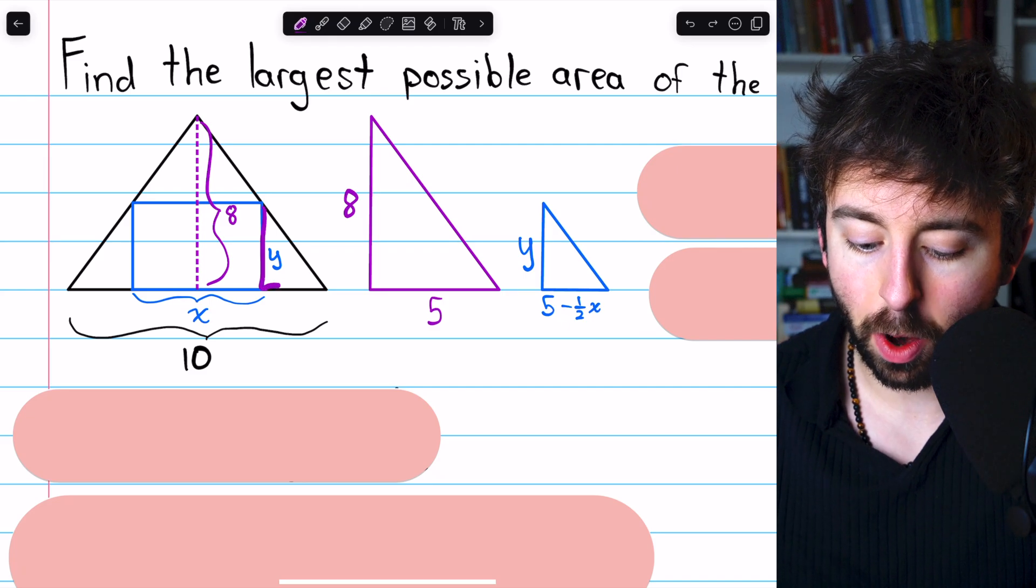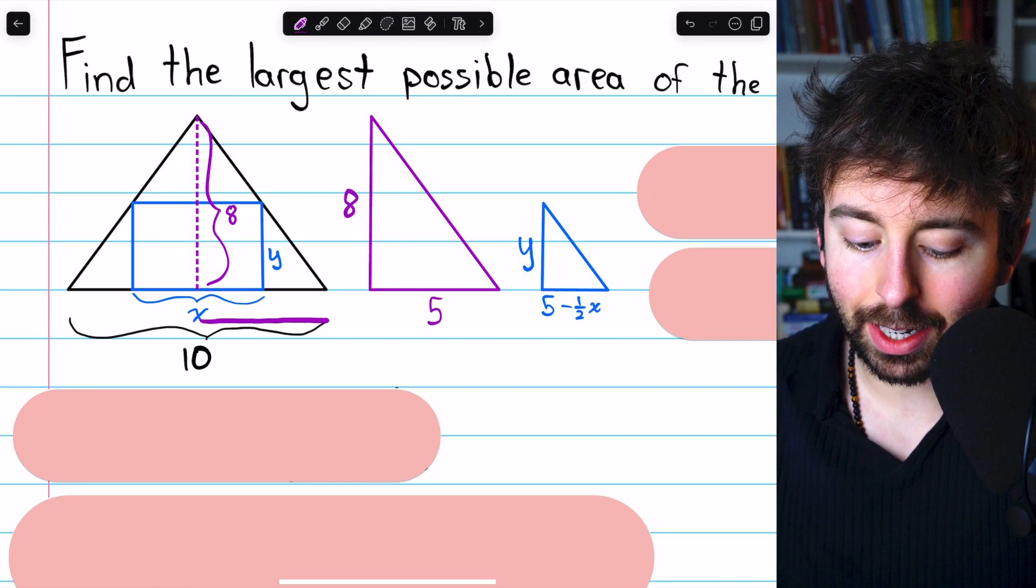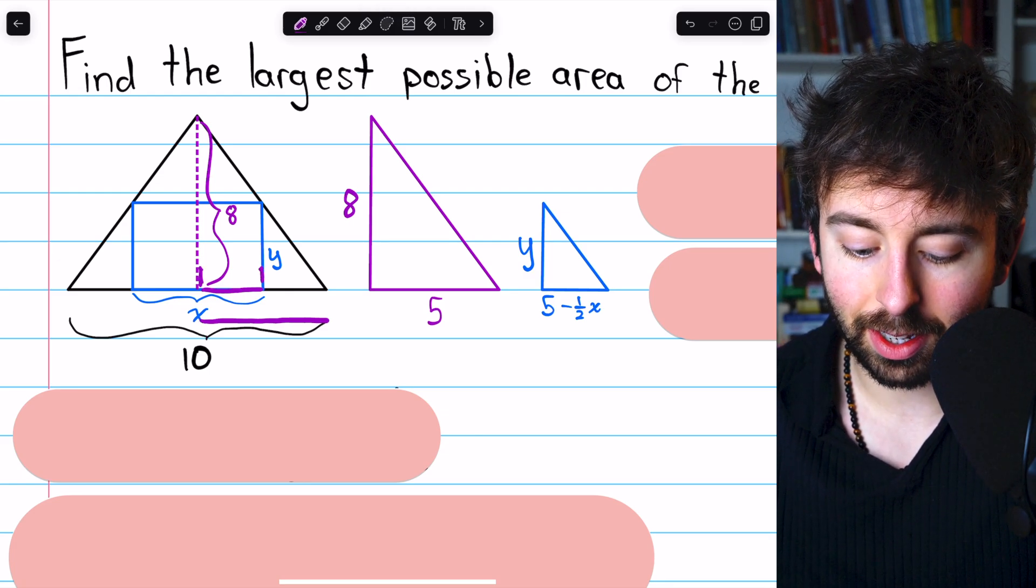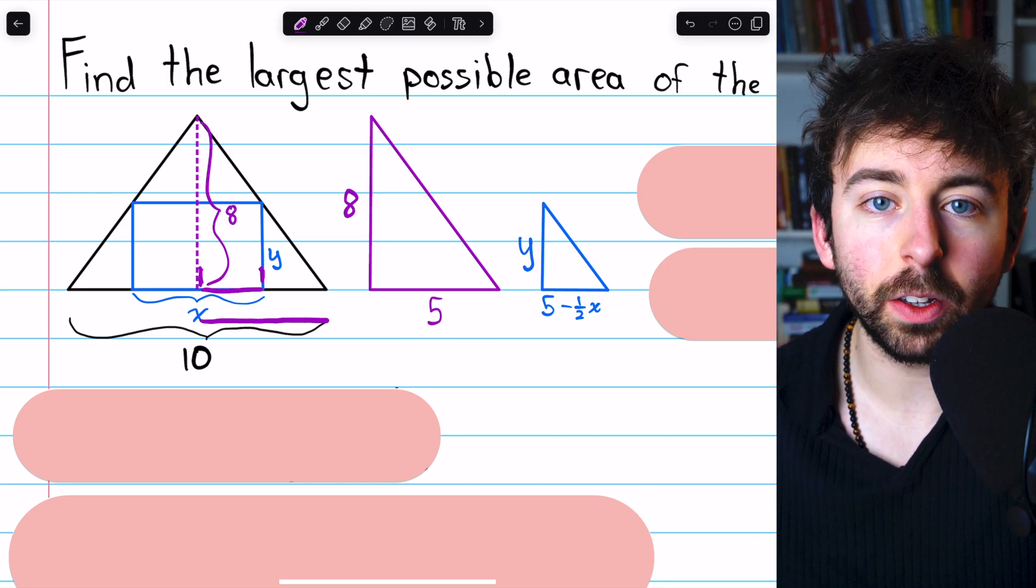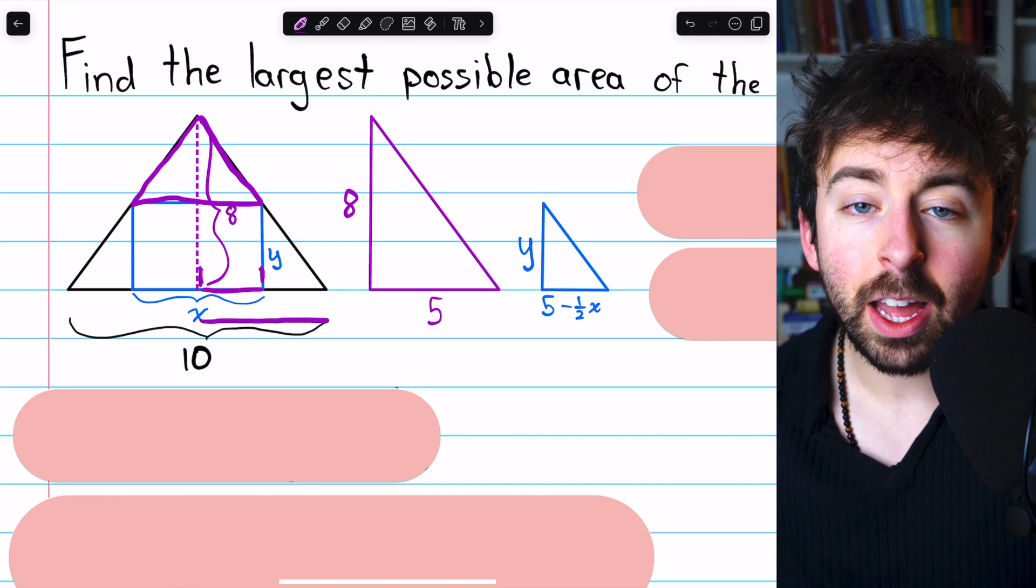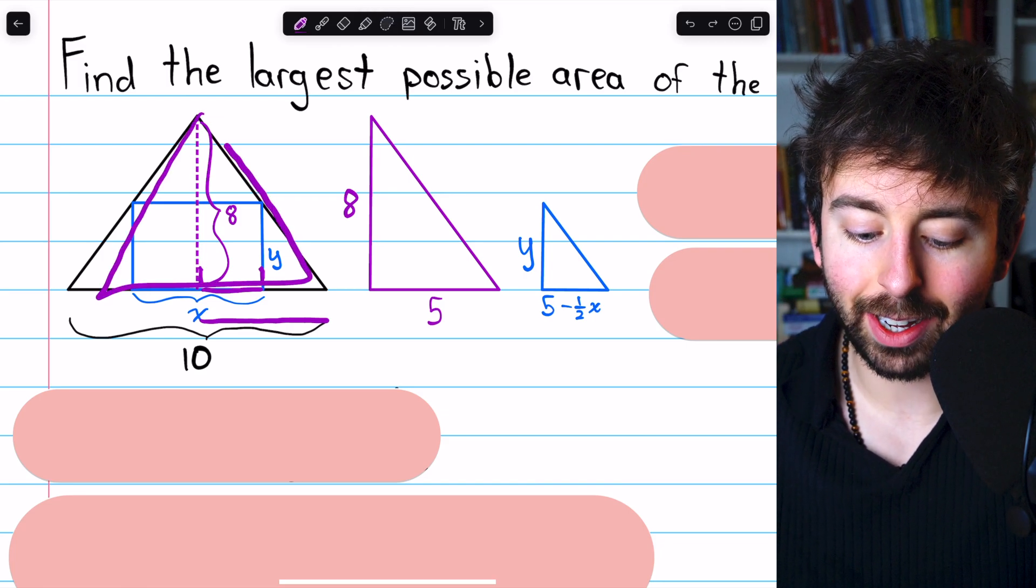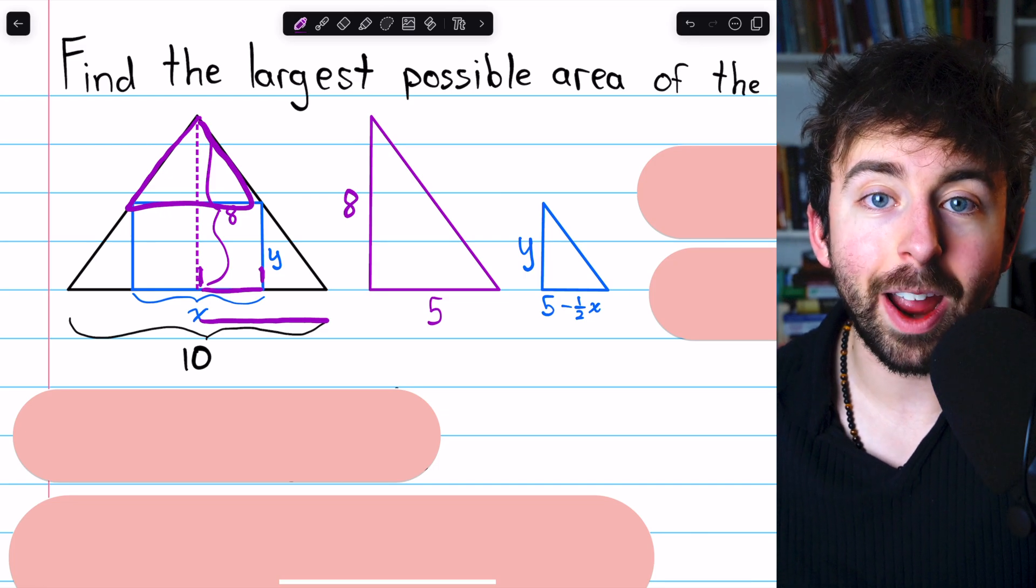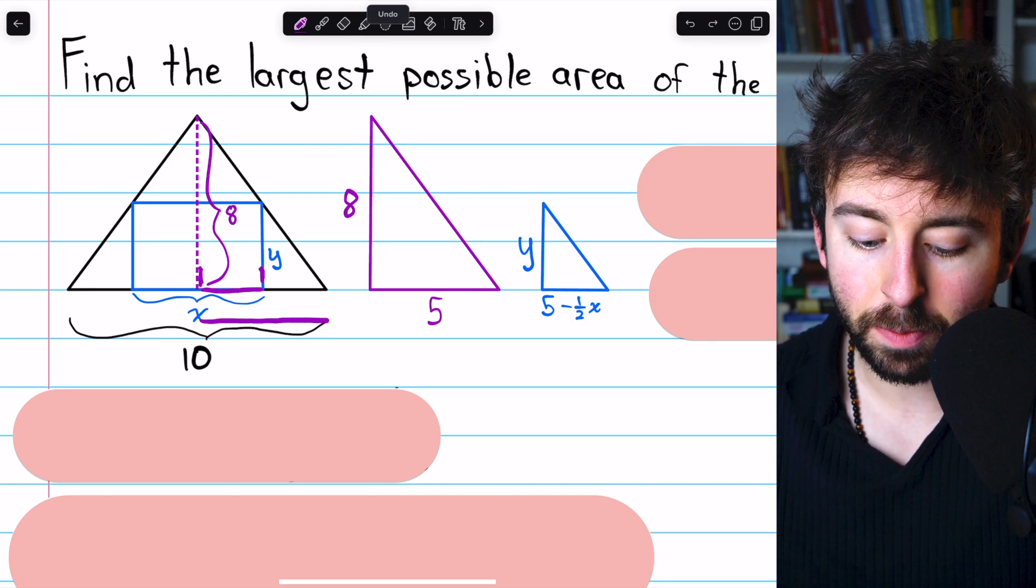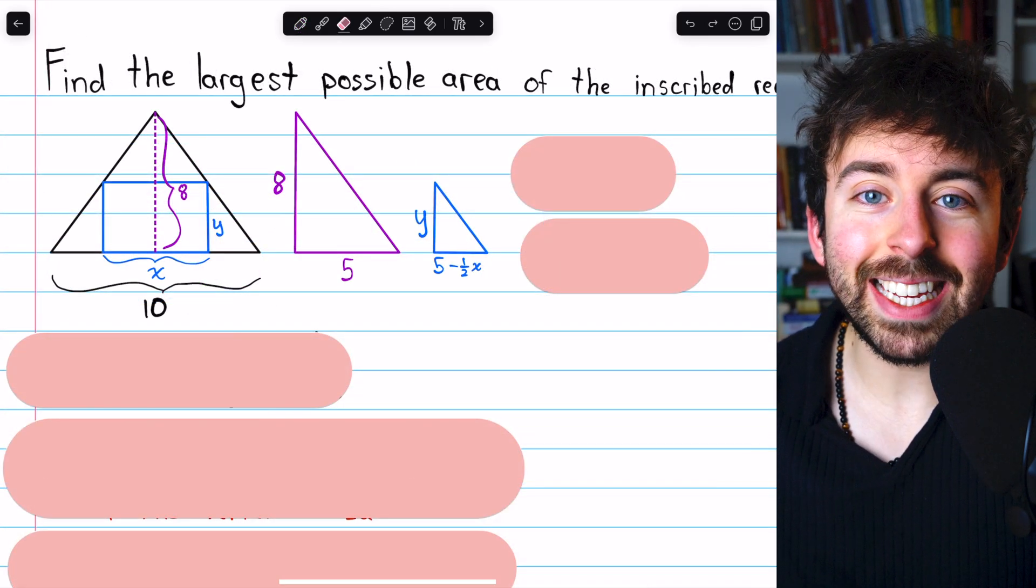Now how do we know the base of this smaller triangle is 5 minus half x? That's because it's this distance minus this distance. This distance we just showed is 5. As for this distance, which is half the base of the rectangle, we know that's half the total base of the rectangle because this triangle up here, this little one, must be similar to the big triangle. So if this perpendicular cuts the big triangle in half, it also cuts this small triangle in half, which means this piece is congruent to this piece. So indeed, this guy here is half x. So this distance is 5 minus half x. Now we can really get on with the algebra.